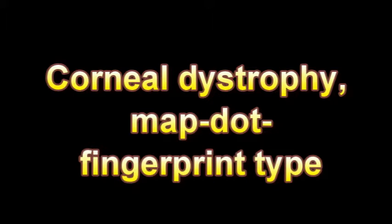Conversely, half of patients with recurrent corneal erosions of idiopathic, unknown, origin have this disorder. Under the microscope, a structure called the epithelial basement membrane is abnormal. The disorder is therefore sometimes called epithelial basement corneal dystrophy.